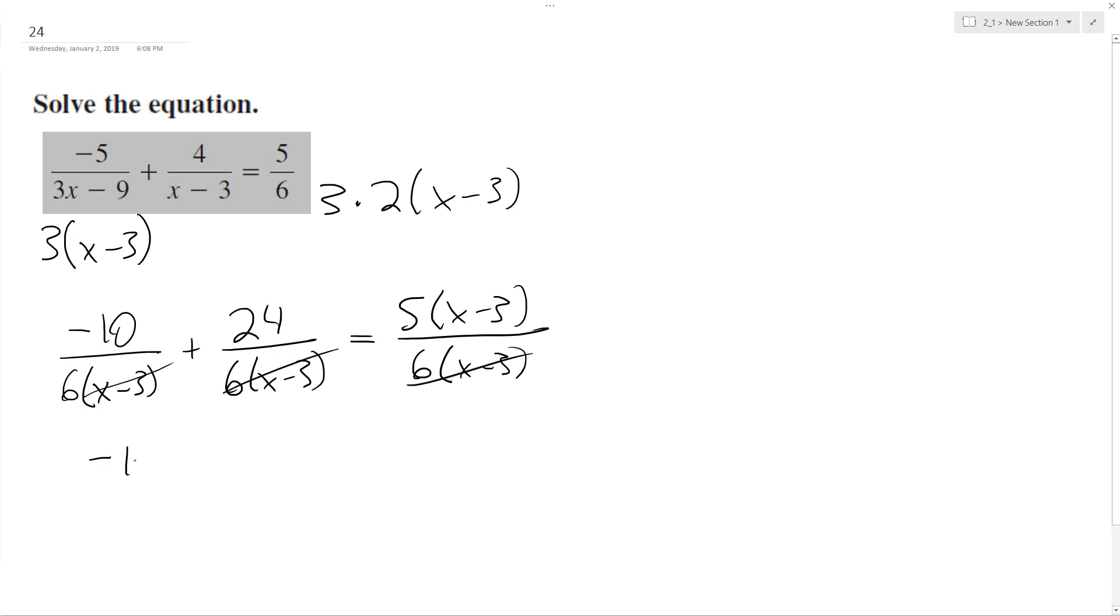and I'm left with negative 10 plus 24 equals 5x minus 15. So add 15 to both sides, and so it ends up being 5, so this cancels, this becomes a 5 plus that, so we end up with 5x equals 29. Divide through by 5, and we end up with x is equal to 29 divided by 5.